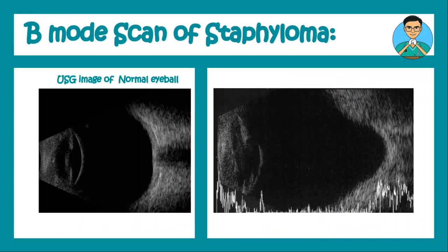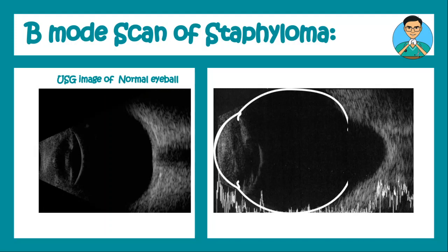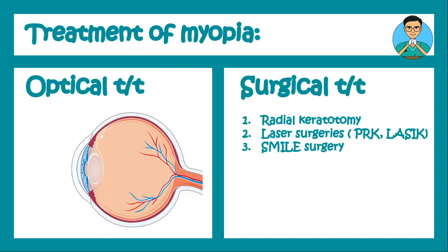To understand staphyloma more clearly, let us look at a B-mode USG scan of the eyeball. On the left hand side is a normal B-mode scan where you can see the contour of the eyeball very clearly. On the right hand side, the anterior part of the eyeball appears normal, but on the posterior aspect there is a bulging out — this is the posterior staphyloma. With this we finish off all the fundal findings of myopia.